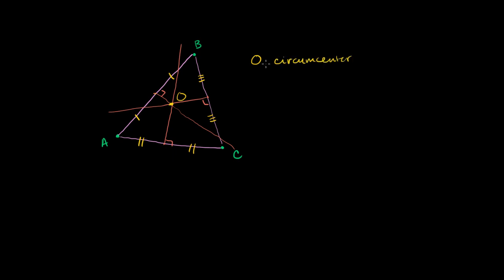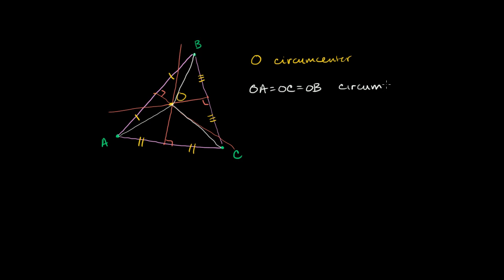This is all a little bit of review. So if you have three points, you have a unique triangle. That unique triangle has a unique circumcenter, which is equidistant to the three vertices of the triangle. And that distance between the circumcenter and the three vertices — OA, OC, and OB — so OA is equal to OC is equal to OB, which is the circumradius.